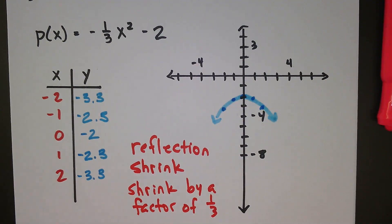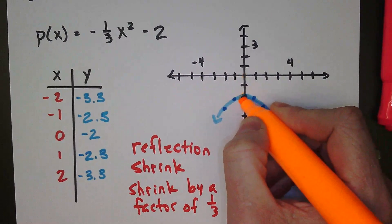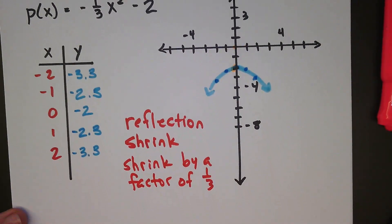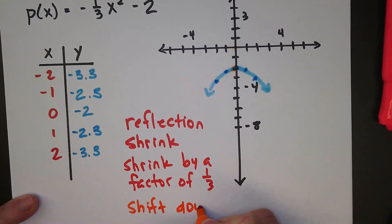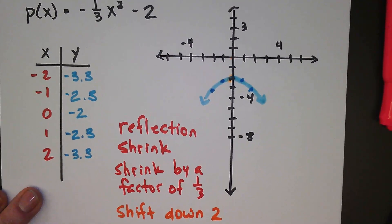Then also, the whole thing has been shifted off of the origin, right here. The vertex is now at negative two, so we also add to this we have a shift down two.